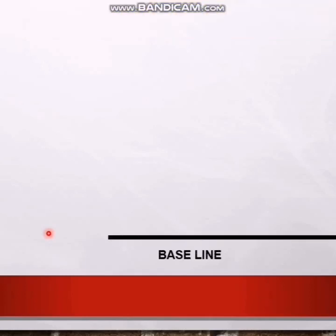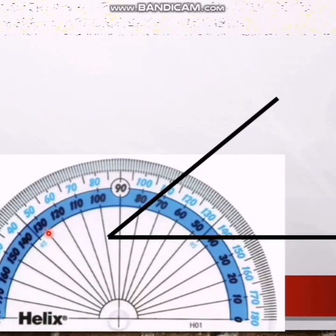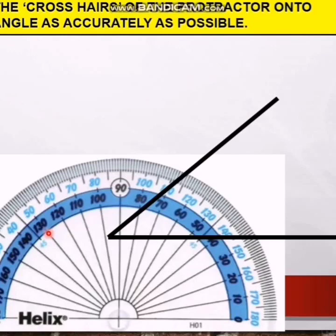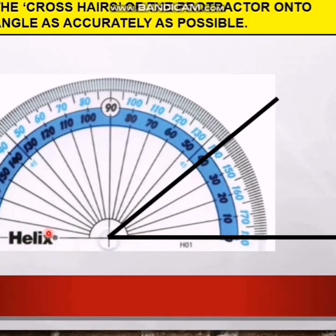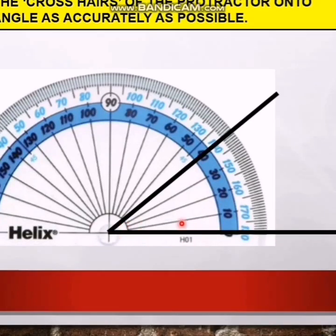First we find the baseline. Here we have a baseline and a protractor. Put the crosshairs of the protractor onto the angle vertex as accurately as possible. I put my protractor exactly at the crosshairs. My baseline is on the zero of the inner scale, so I count from that zero.